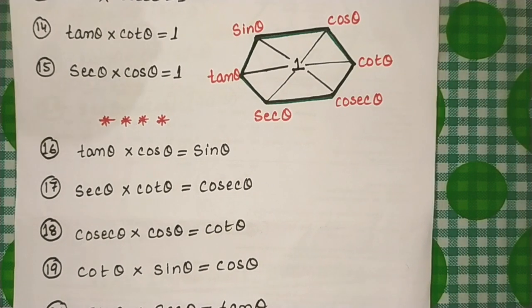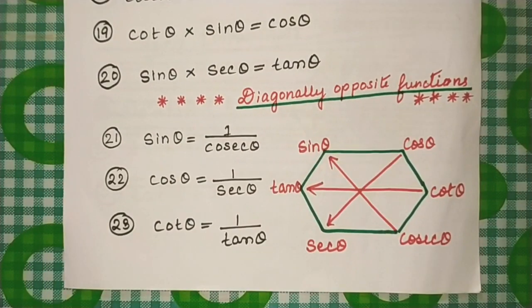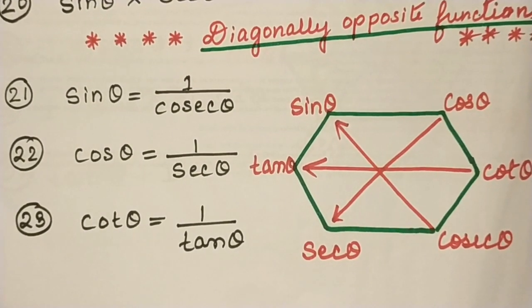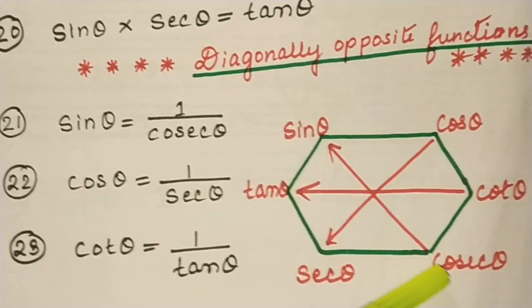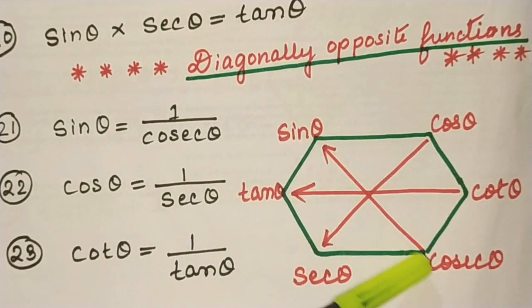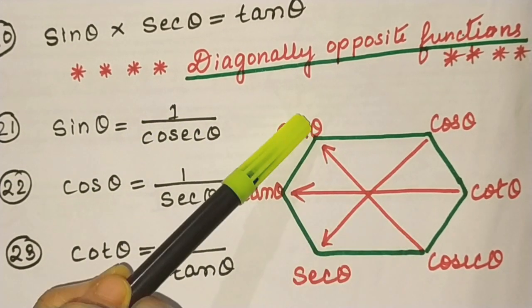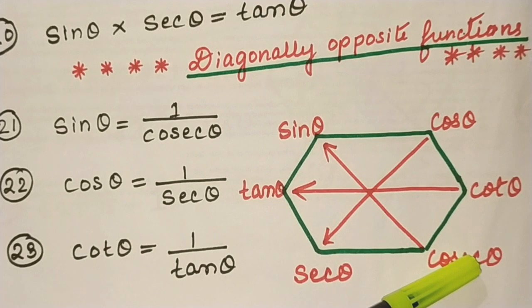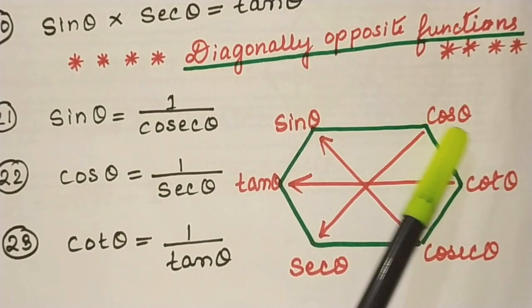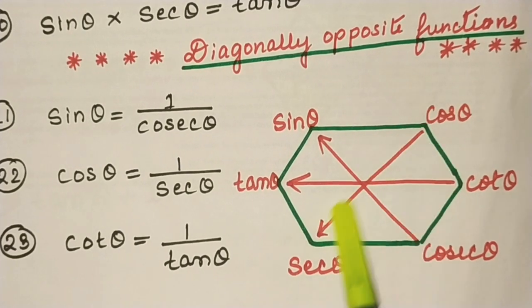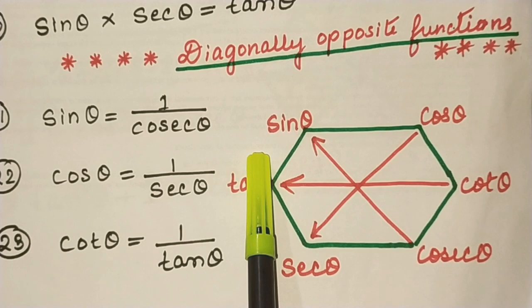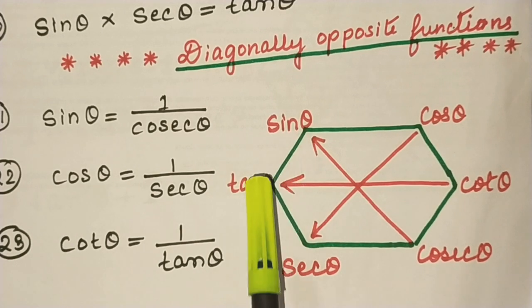Now the diagonally opposite functions are reciprocals of each other. So: cosec θ = 1 / sin θ, cos θ = 1 / sec θ, and cot θ = 1 / tan θ.